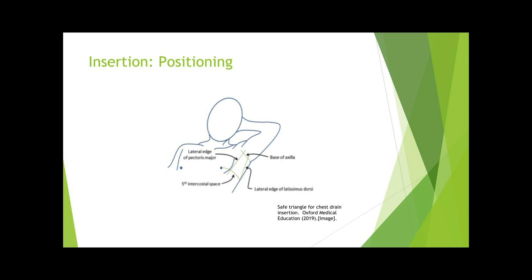The triangle of safety is a safe area to insert a chest tube. This is an area bordered anteriorly by the lateral border of the pectoralis major, posteriorly by the lateral border of the latissimus dorsi, and inferiorly by a horizontal line at the level of the fifth intercostal space. This level is marked by an imaginary line extending laterally from the inframammary fold. The chest tube will be inserted via an incision in the fourth or fifth intercostal space in the anterior axillary line within the triangle of safety.